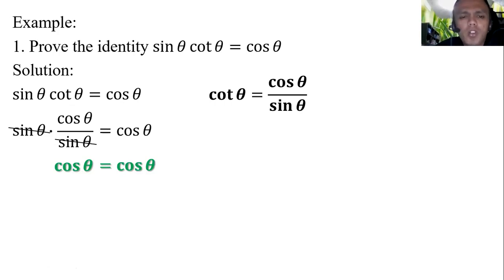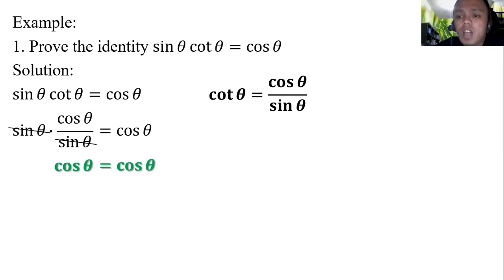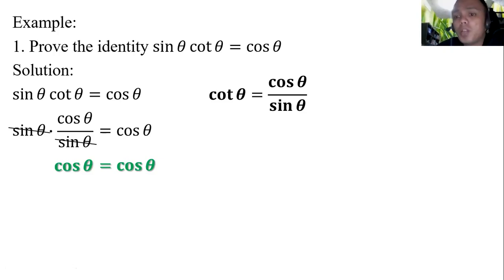How do we choose which trigonometric identity to use? First, make sure there is something that can cancel out. Second, check if there is something you can add, divide, or multiply.